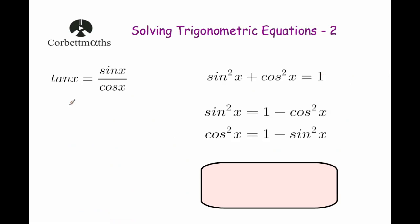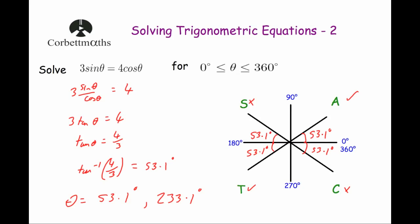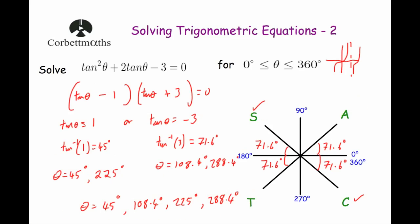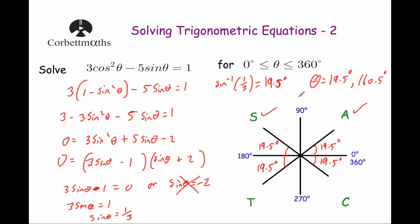The trig identities useful for solving trig equations are: tan x equals sine x divided by cos x; and sine squared x plus cos squared x equals 1, which rearranges to either sine squared x equals 1 minus cos squared x, or cos squared x equals 1 minus sine squared x. These identities can be used to rearrange equations into a format solvable by the same approaches as Solving Trigonometric Equations 1.